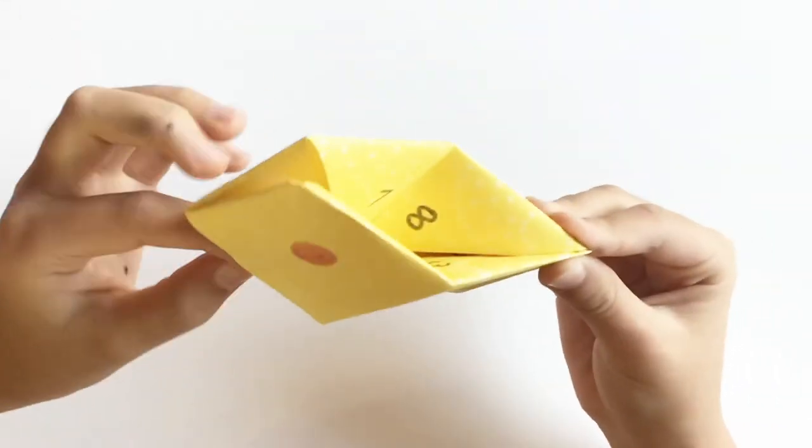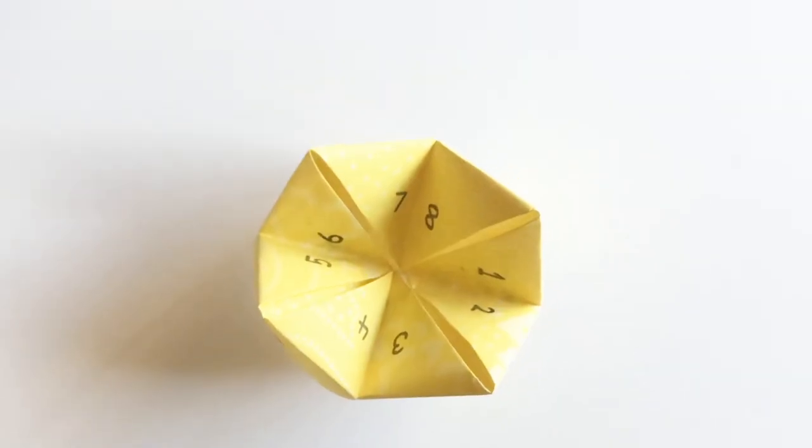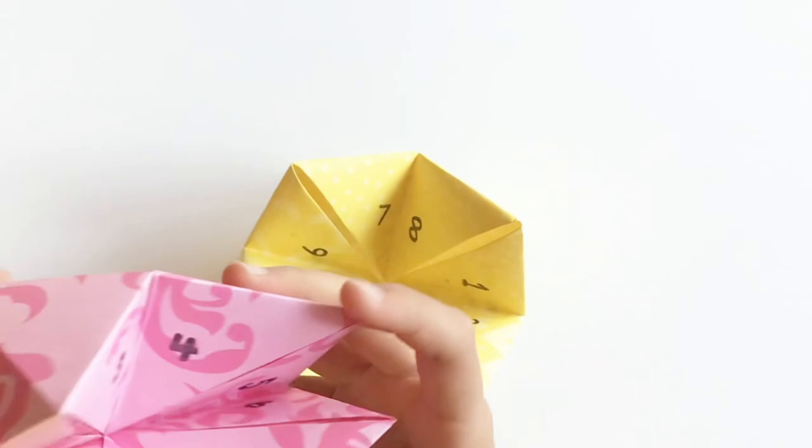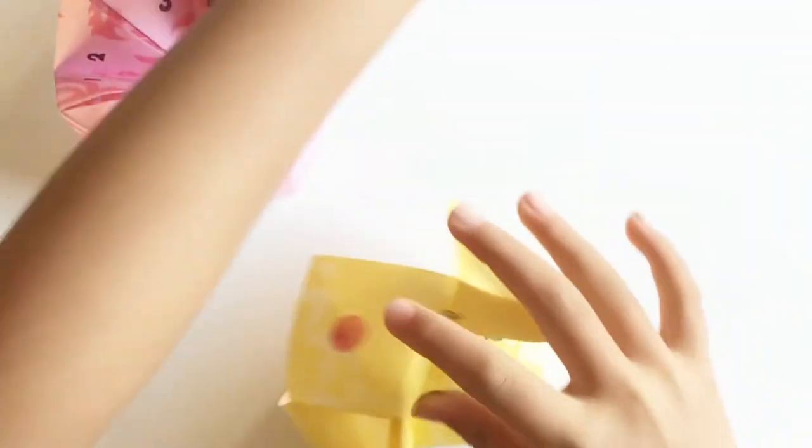Now I put my fingers inside of the fortune tower again. Here are some other fortune towers I've made. This is a big pink one and I have a small blue one.